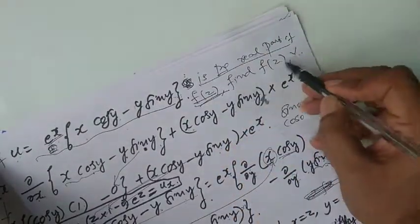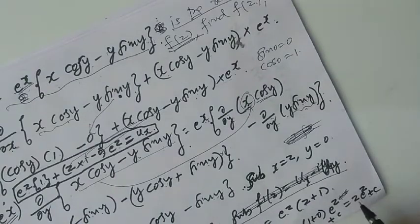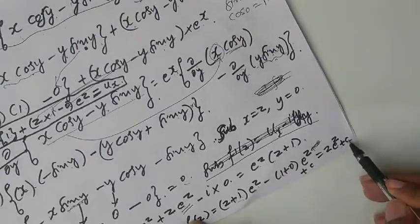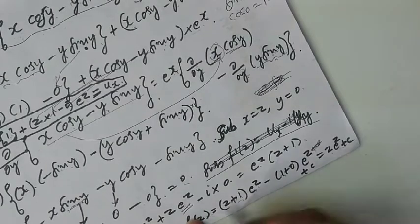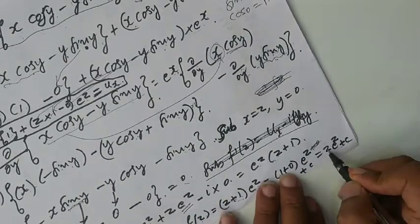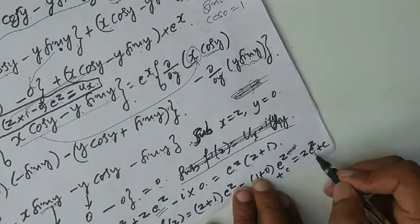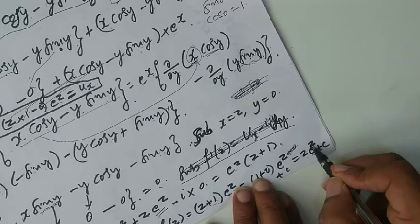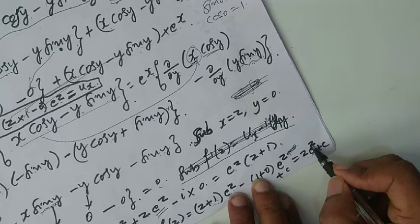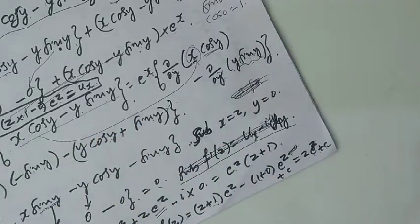Now to find v. f(z) equals z into e to the power z plus c. If you want to find v, put f(z) equal to u plus iv and put z equal to x plus iy. You will get e to the power (x+iy), which can be written as e to the power x into e to the power iy. That e to the power iy is written as cos y plus i sin y. Multiply, separate the real and imaginary parts, and take the imaginary part — that gives v.